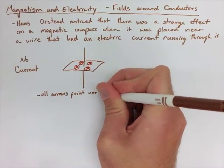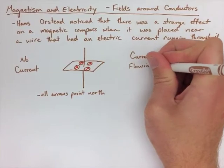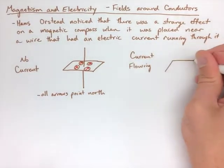He then put a current through the wire. Let's say the current was going down. So the exact same diagram, but you're going to notice the compasses look a little bit different.